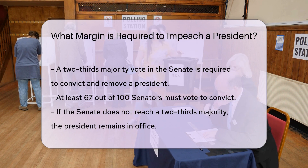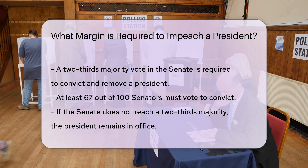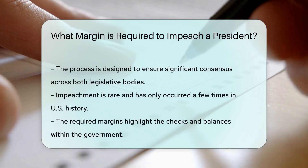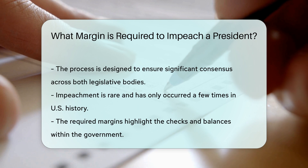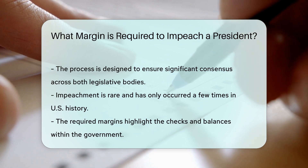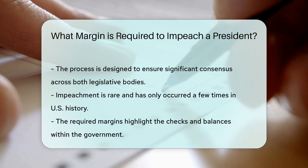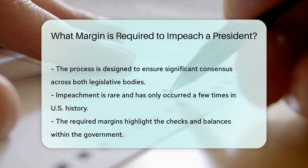The framers of the Constitution designed this process to ensure that removing a president is not taken lightly. It requires significant consensus across both legislative bodies. Impeachment is rare and has only occurred a few times in U.S. history. Understanding the required margins helps clarify the checks and balances in place within the government.